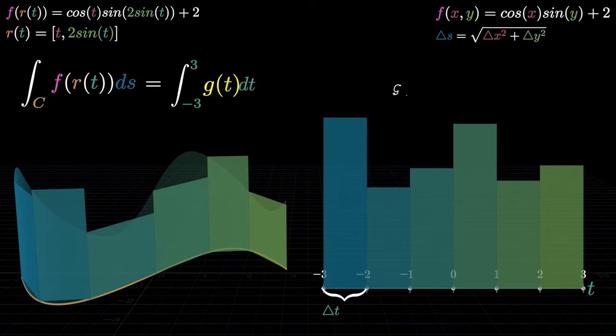So the new heights, g of t, are f of r of t times delta s over delta t.